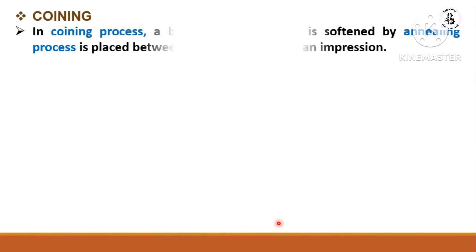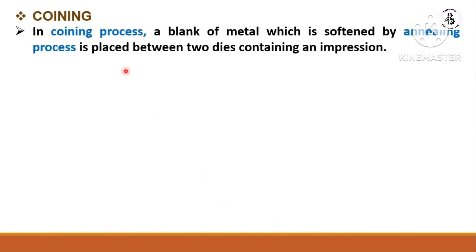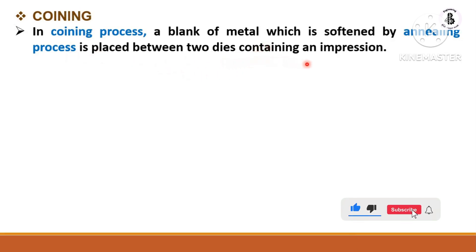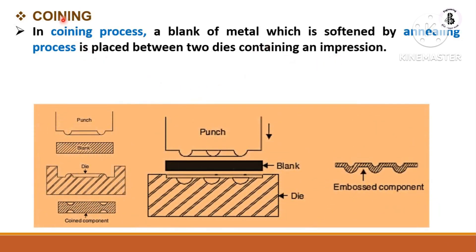In the case of coining, a blank of sheet metal is softened by the annealing process — annealing means heating, holding, and cooling, with furnace cooling making the material softer. This softened blank is then placed between two dies containing impressions. In coining, both the top surface and bottom surface of the sheet metal generate impressions.